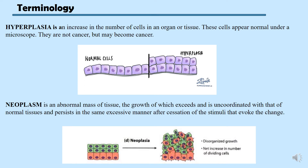Next is neoplasia. Neoplasia is an abnormal mass of tissue, the growth of which exceeds and is uncoordinated with that of normal tissue and persists in the same excessive manner after cessation of the stimuli that evoke the change. This widely used definition clearly explains what neoplasm is and how it differs from hyperplasia. In neoplasm there is uncontrolled growth that continues even after the stimuli that initiated it is removed. So neoplasm is uncontrolled or abnormal mass of tissue, whereas hyperplasia is normal-looking cells but in abnormal numbers.